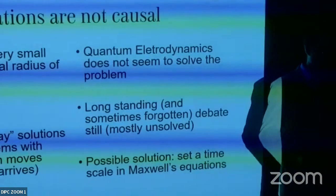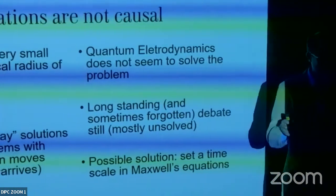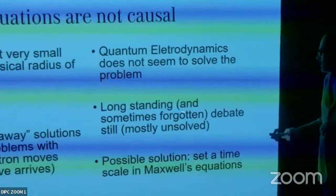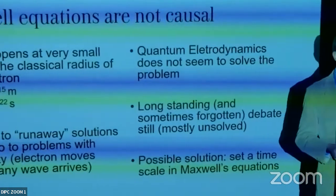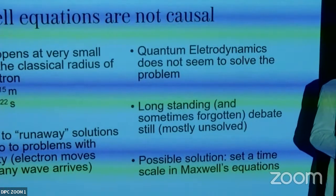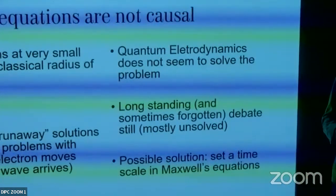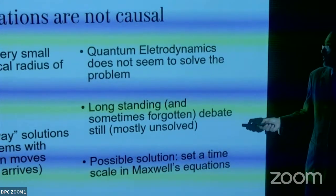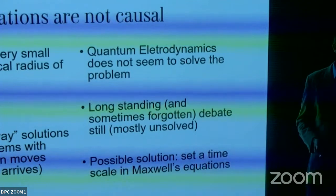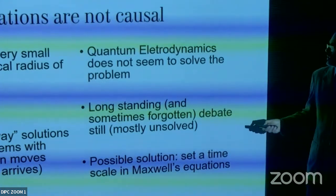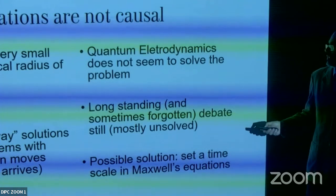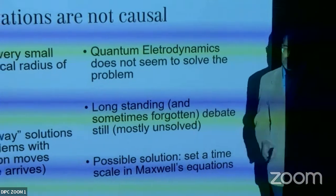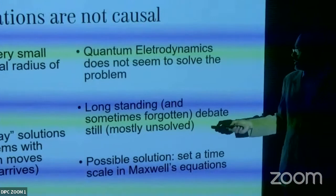This is embedded in Maxwell's equations. Many people have tried to solve it — Abraham-Lorentz, Dirac, Einstein, Feynman — they all dealt with this problem and didn't find a solution. It happens at very small scales, within what's called the classical electron radius, which is about 10⁻¹⁵ meters.